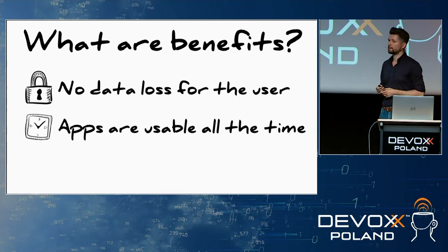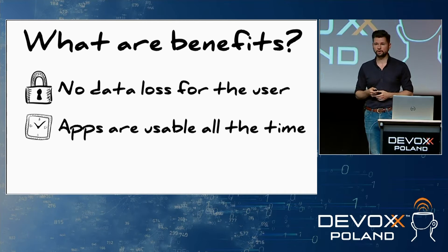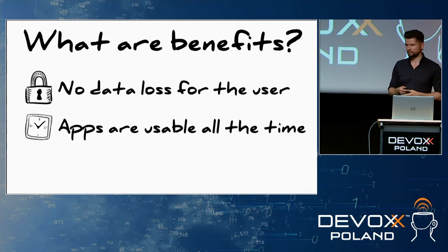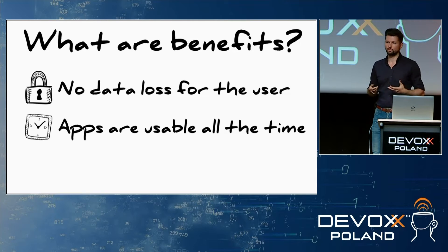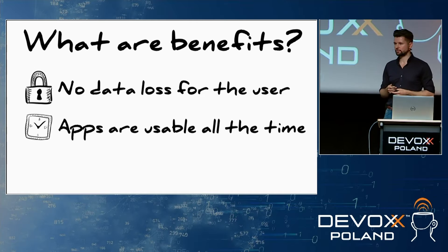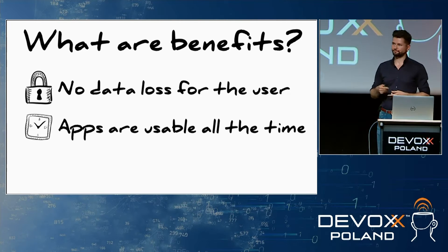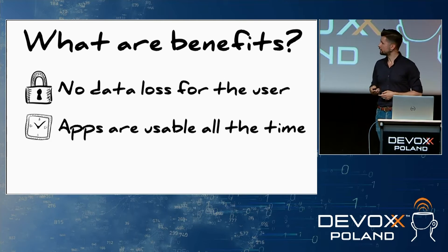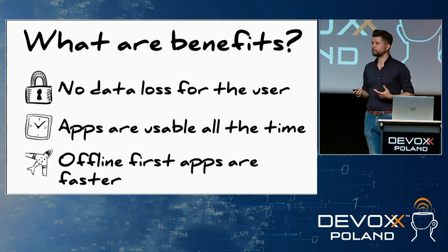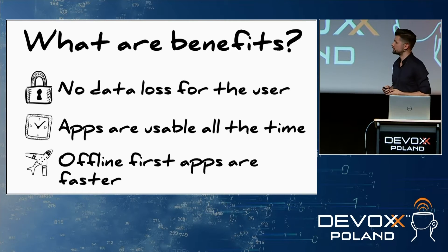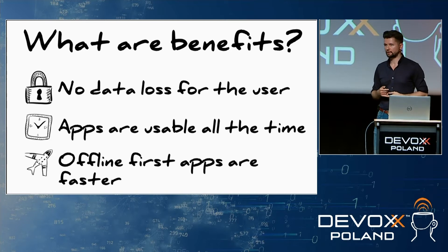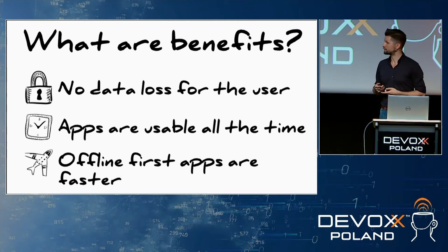This is also very important for hybrid applications — web applications hosted as native-like, for example using Electron. In classic web apps, users know they need internet. But with native applications, users expect them to work offline too. The offline first approach helps with that. Another benefit is that offline first applications may actually be faster than classic ones, because they access local data, and accessing local data is generally faster than accessing remote ones.